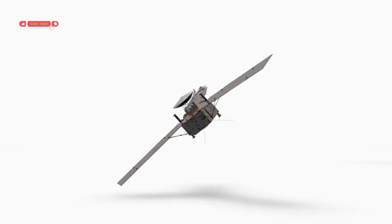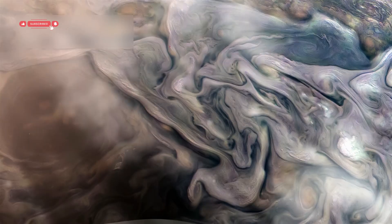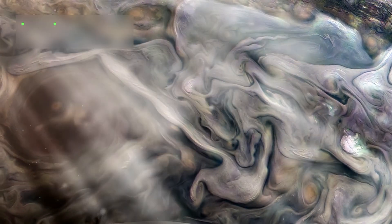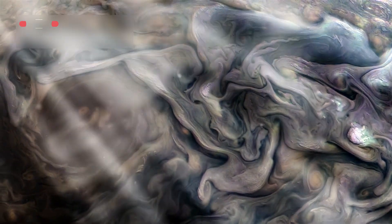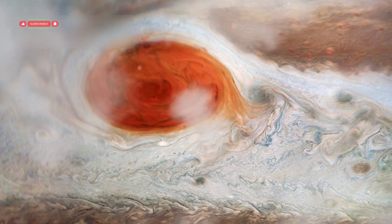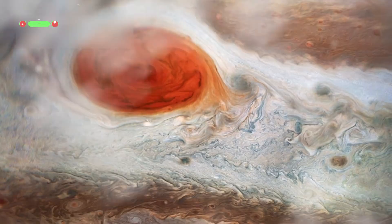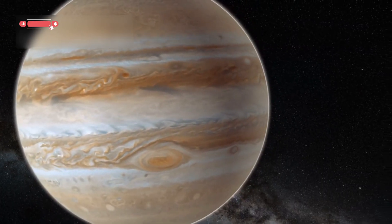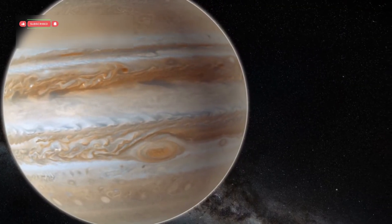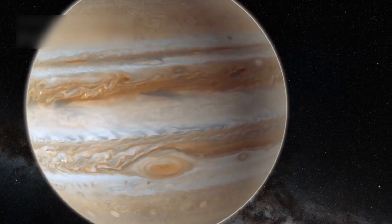At Jupiter, the Voyager probes revealed hidden wonders. They saw the swirling storms and colored bands in Jupiter's huge atmosphere with amazing clarity. The great red spot, a giant storm on Jupiter, was captured in detail for the first time. The probes even discovered that Jupiter has a faint ring system of its own, and they photographed dozens of small moons orbiting the giant planet.